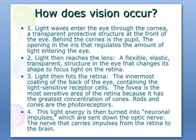In the working of the eye, light rays enter through the cornea — a transparent protective structure at the front of the eye. Behind the cornea is the pupil, the opening that regulates the amount of light entering the eye. The light then reaches the lens, a flexible, elastic, transparent structure that changes its shape to focus light on the retina. The retina is the innermost coating at the back of the eye containing light-sensitive receptor cells. The fovea is the most sensitive area of the retina because it has the greatest concentration of cones.